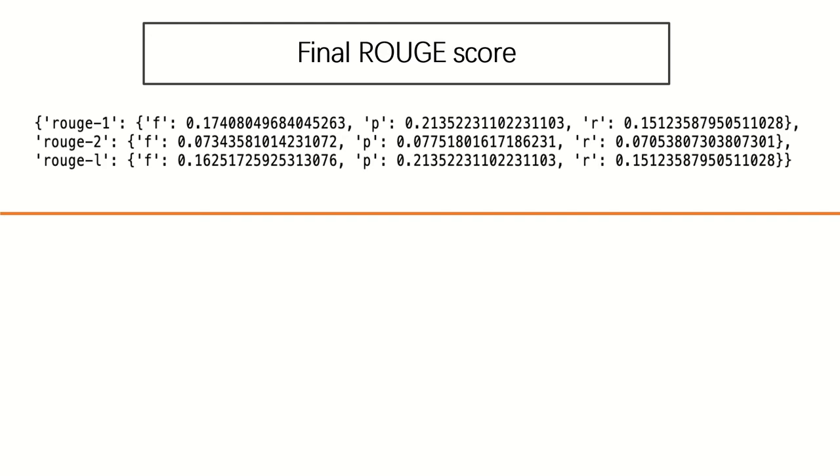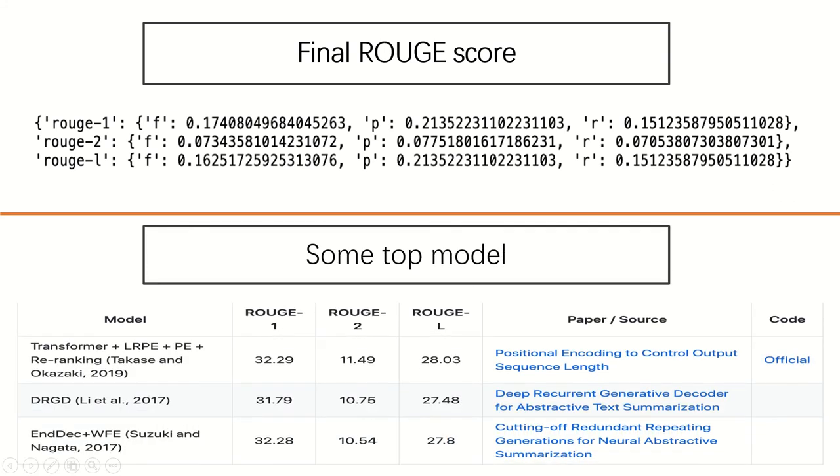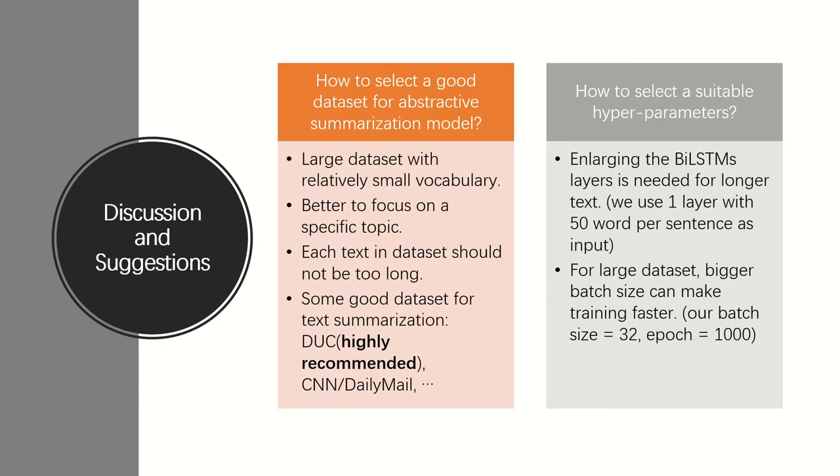So this is the final ROUGE score. And this is the topic model score. So for dataset choice, basically, the policy is to choose large dataset with relatively small vocabulary.